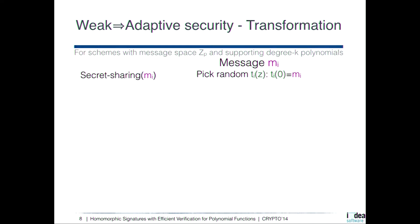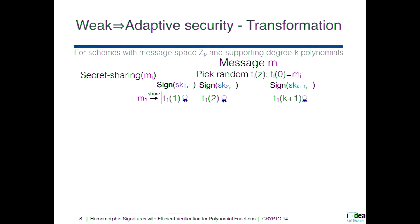Our technique instead relies on the following idea. Assume you want to sign a message M. What you do is make a secret sharing of M by picking a random polynomial of degree one that evaluates to the message at point zero. Then you create K+1 shares of this message by evaluating the polynomial at K+1 distinct points. You then sign each of these shares separately with a different instance of the weakly secure homomorphic scheme — the first share with secret key SK₁, the second with SK₂, and so on.